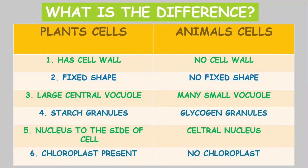The plant cell has a cell wall which makes it very rigid, while the animal cell does not have a cell wall, and hence its flexibility. The plant cell has a fixed shape usually, while the animal cell does not have a fixed shape.